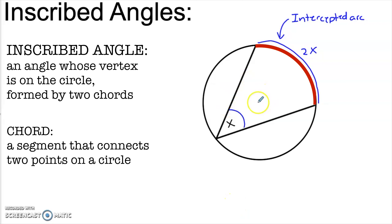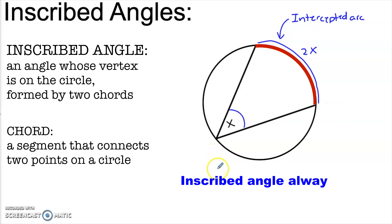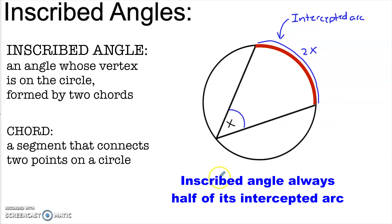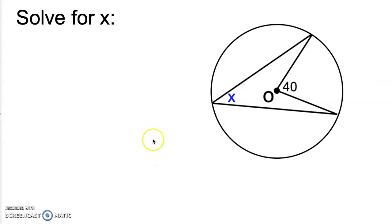That is to say, if this angle has x degrees, then the measure of this intercepted arc is 2x. If the angle is 30, the arc is 60. Notice that the center of the circle is not here, so it doesn't matter where the center of the circle is. As long as you have an angle formed by two chords and the vertex is on the circle, it's going to be an inscribed angle, and it will be half of its intercepted arc.